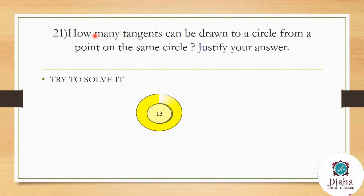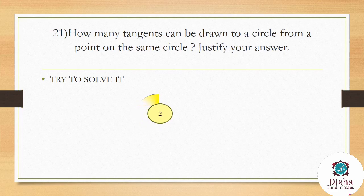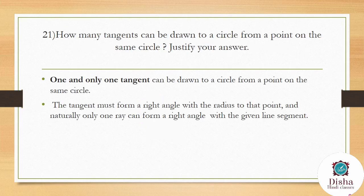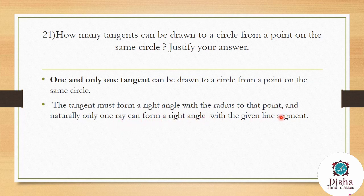How many tangents can be drawn to a circle from a point on the same circle? Only one tangent can be drawn. The tangent must form a right angle with the radius at that point, and naturally only one ray can form a right angle with a given line segment at that point.